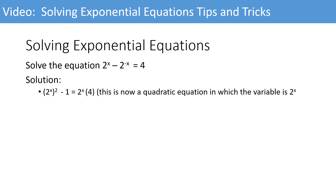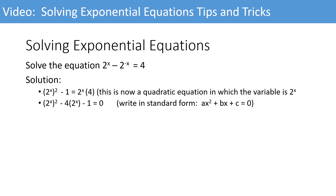Looking at the result from the previous step, we get (2 to the exponent x) squared minus 1 equals 2 to the exponent x times 4. This is now starting to look like a quadratic equation in which the variable is 2^x. Rewriting by moving the 2 to the exponent x times 4 term over, we get (2^x) squared minus 4 times 2^x minus 1 equals 0, written in standard form. We can identify our coefficients: a equals 1, b equals negative 4, and c equals negative 1.